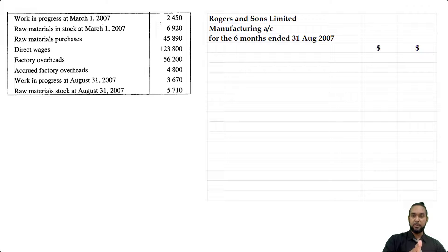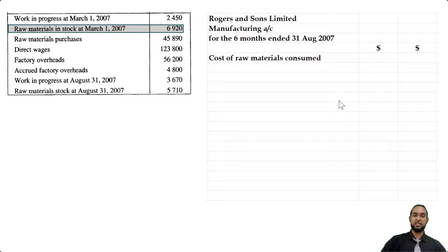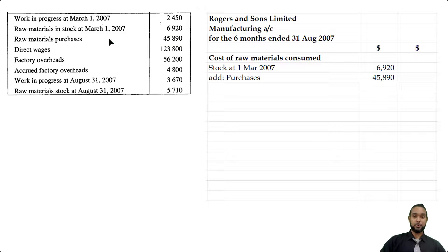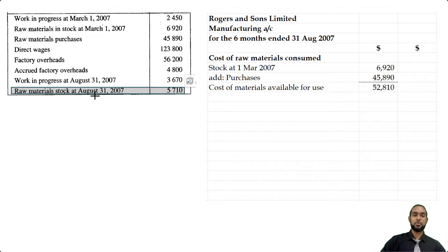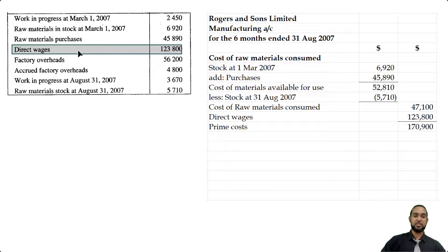If you need to see how to do manufacturing accounts, check out my playlist above or in the description below. The first item is the cost of raw materials consumed. We start with the opening stock of raw materials of $69,200, add purchases of $45,890. There are no carriage or returns outwards, so those add to give the cost of raw materials available for use, from which we subtract raw materials at end to get cost of materials consumed. We then add direct wages of $1,238 to get total prime costs of $179,000.